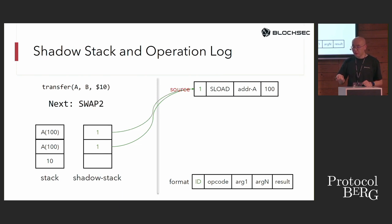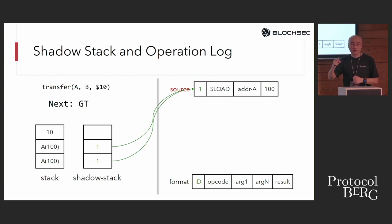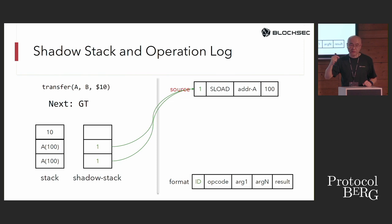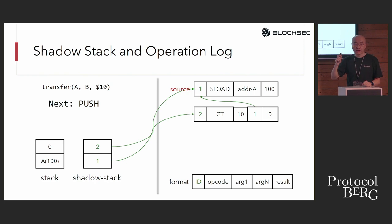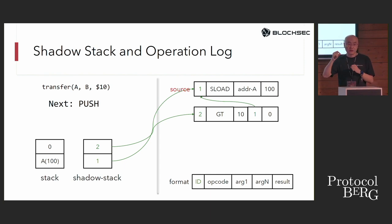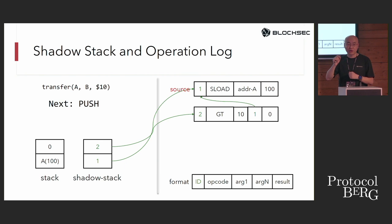Then we have a DUP1 operation, followed by a GT (greater than) operation to compare the balance of account A to 10. This creates operation log entry 2: opcode GT, operand 10, taking the output of operation log 1 as input. The GT checks whether the current balance of account A exceeds 10.